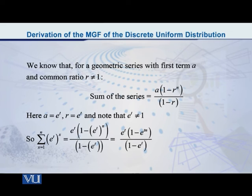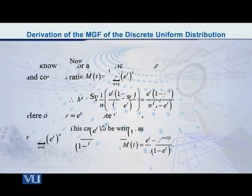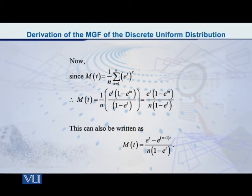Obviously, e raised to t, whole raised to n, can be written as e raised to tn. And that gives you that expression which you can now see. Now, let us put it in that initial expression of the MGF. Students, put it in there. What is the final result? The final result is the MGF, M(t), is equal to e raised to t minus e raised to (n+1)t, divided by n times one minus e raised to t. Obviously, you just did a little bit of algebraic manipulation in order to get this final result.